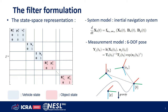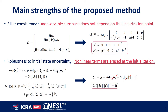The main strengths of the proposed method are: first, the unobservable subspace does not depend on the linearization point. This is the generalization of the point model to the object SLAM problem. Second, we see that only linear measurement errors are identically zero at the initialization. This yields high robustness to uncertain initial estimates.